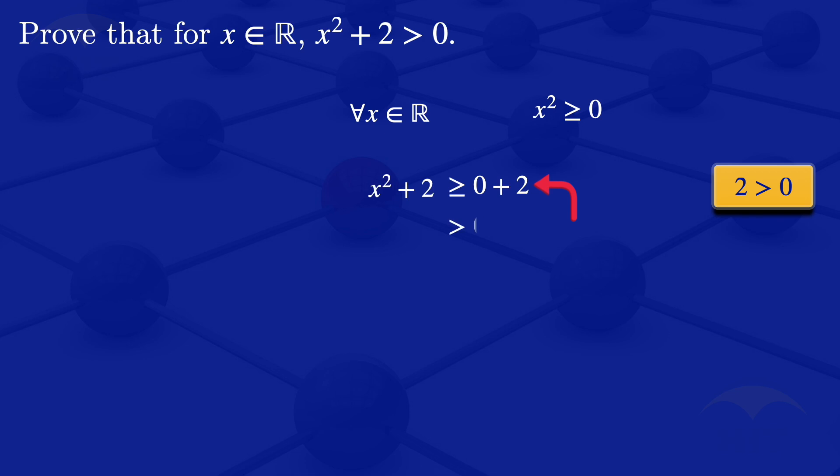So we can write that x squared plus 2 is greater than 0. Therefore, for all x which are real numbers, x squared plus 2 is greater than 0.